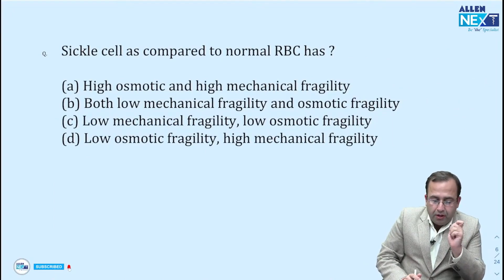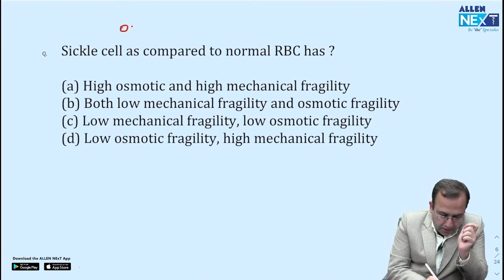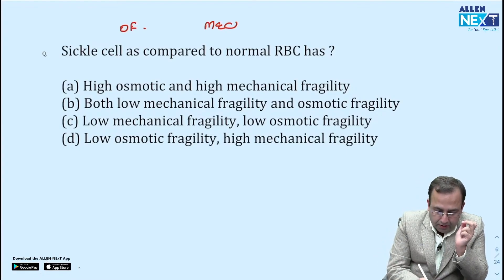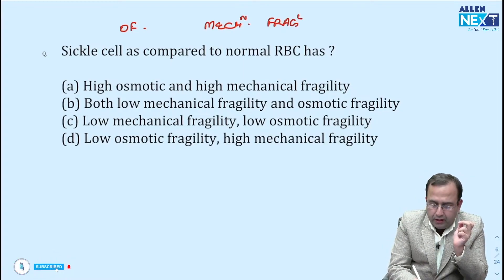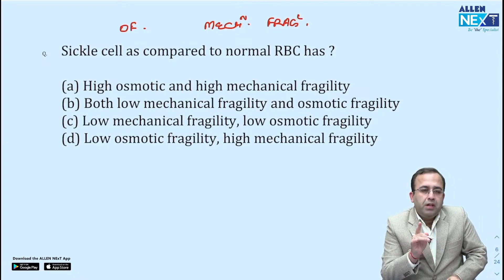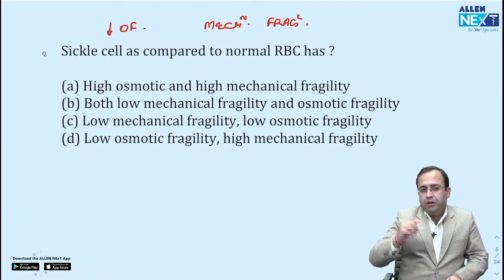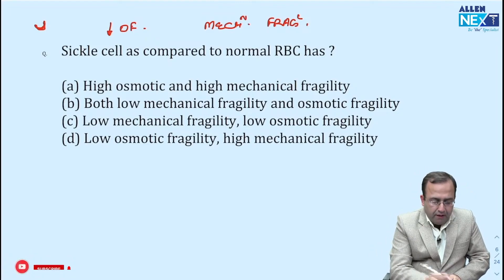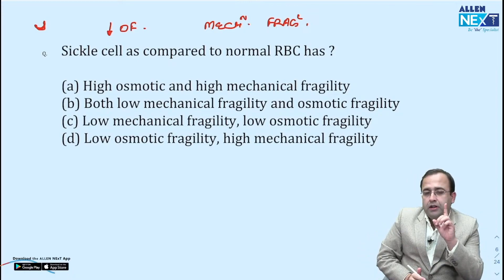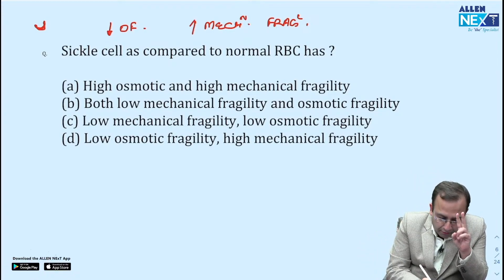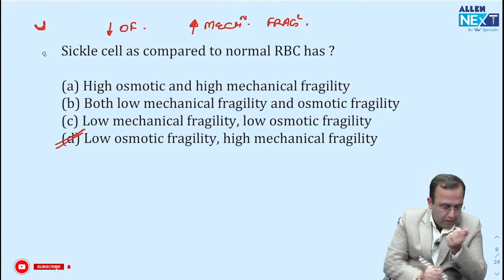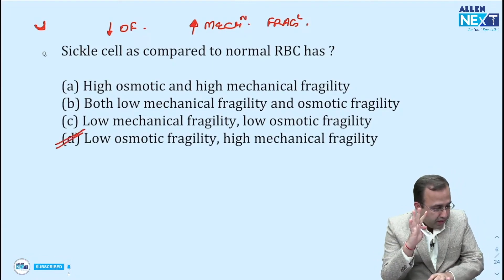Next — sickle cell as compared to normal RBC has: the examiner is talking about osmotic fragility and mechanical fragility. I always find it easier to think of the answer first and then go to the options. Sickle cell anemia has reduced osmotic fragility because sickle cell is a dehydrated RBC — water enters, it becomes normal, then more water enters, it undergoes hemolysis. It has reduced osmotic fragility with increased mechanical fragility. That is why it is a hemolytic anemia. The answer was option 4.